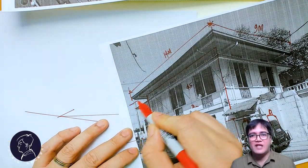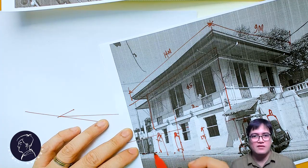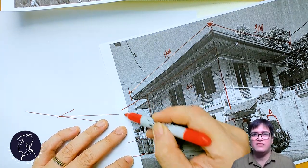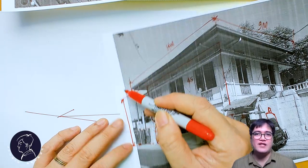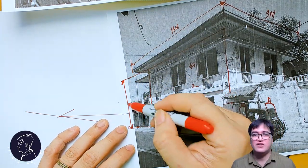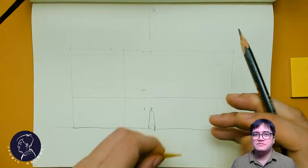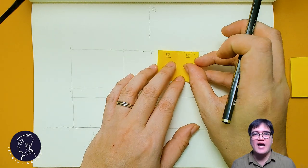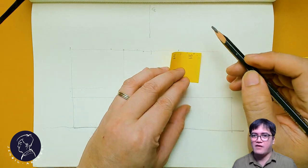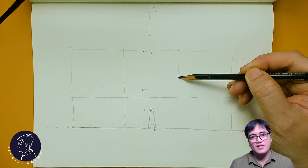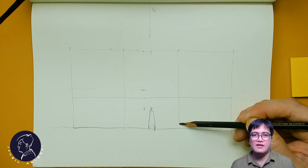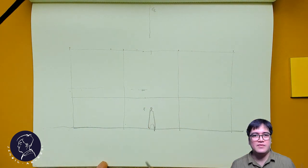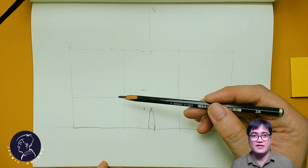Step two — once you have established the facade width, you can come up with a more accurate estimate of the building heights by proportioning through referencing available photos of the structure. Step three — from here, you can divide the facade into smaller areas, since most buildings, especially heritage buildings, have a more traditional facade design. You can look for columns or frames that divide the facade vertically.